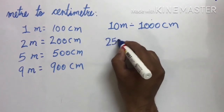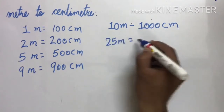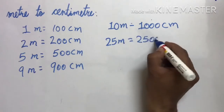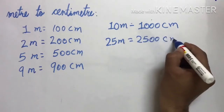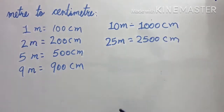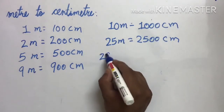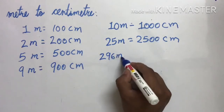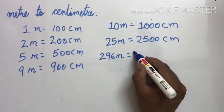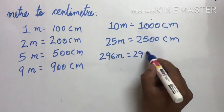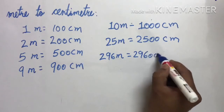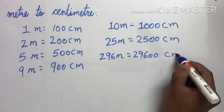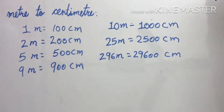25 meter हो तो क्या होगा? 2,500 cm. Understood? 296 meter हो तो क्या होगा? 29,600 cm. Right. So अभी हम convert करते हैं।